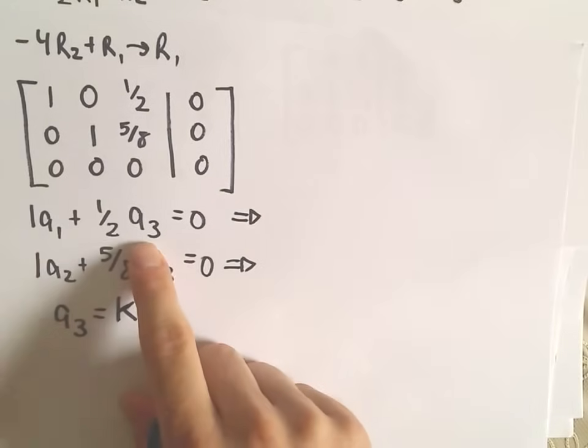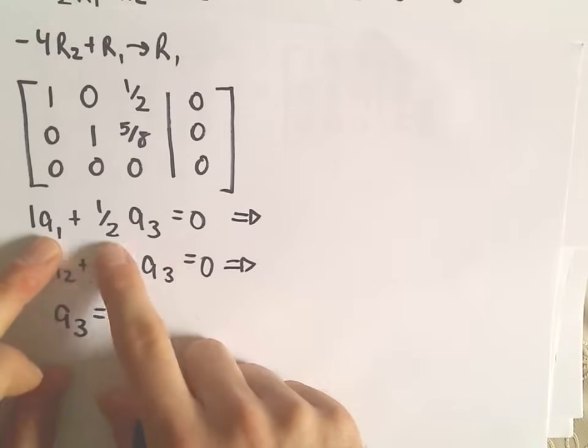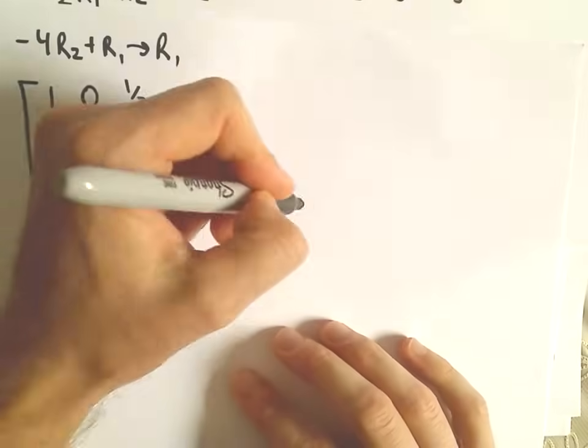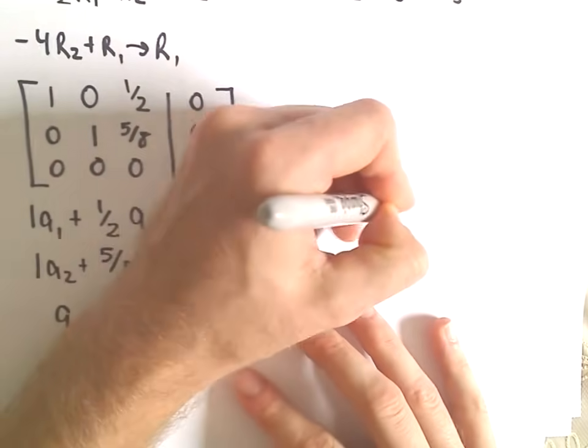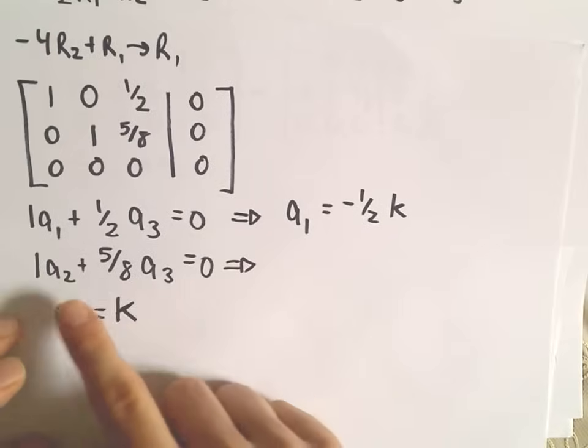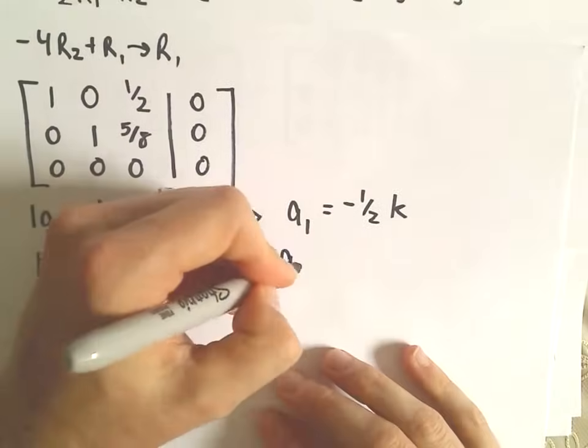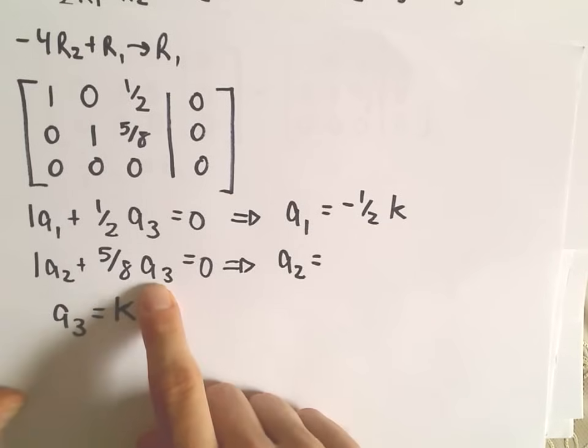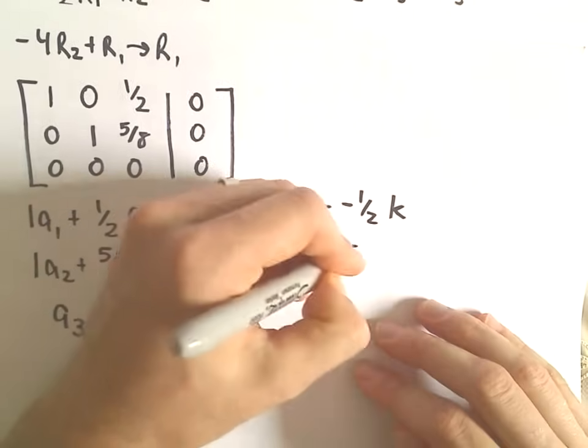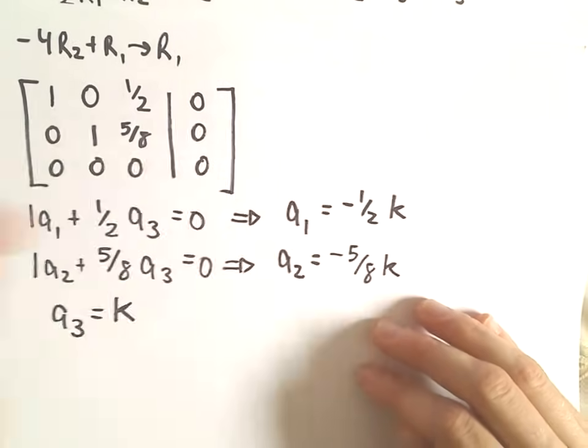Well, if we plug in k, we would get a sub 1 plus 1 half k equals 0. Or we would get a sub 1 equals, well, negative 1 half times k. And likewise, for a sub 2, if we plug in k, we would have a sub 2 plus 5 8ths times k equals 0. So we would just get negative 5 8ths times k.